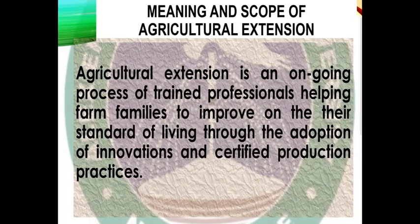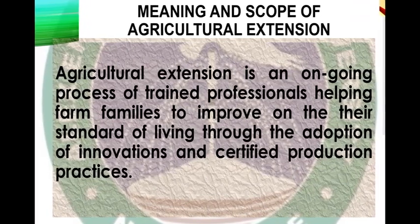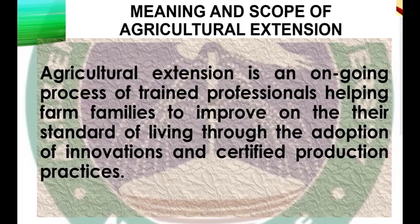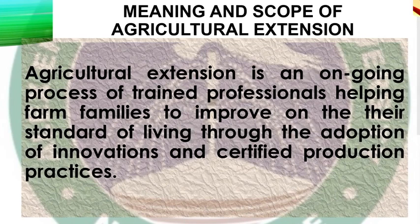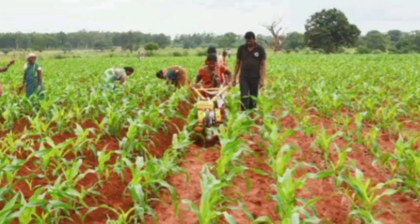These new ideas, new ways, and new practices are called innovations — they exist in both practices, behaviors, and farm products. Extension works with certified production practices. The certification process typically begins at innovation incubation centers and moves through stages such as the Small Plot Adoption Technique (SPAT), which is part of the ADP process and came with the training and visit system.